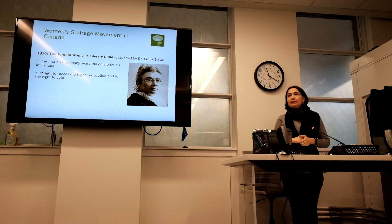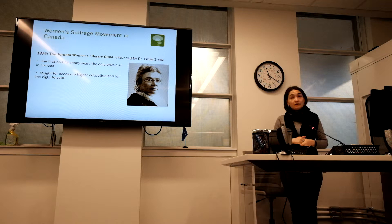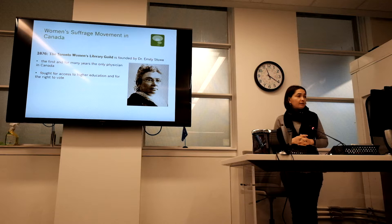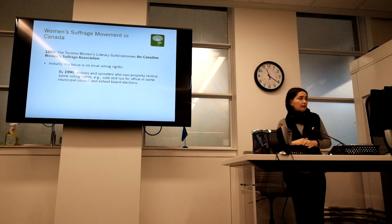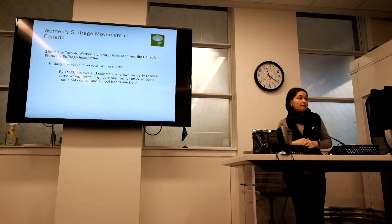In 1876, the Toronto Women's Literary Guild was founded by Dr. Emily Stowe — the first Canadian female physician, who for many years remained the only female physician in Canada. She fought for access to higher education and for the right to vote for women. In 1883, the Toronto Women's Literary Guild became the Canadian Women's Suffrage Association. Initially the focus was on local voting rights, and by 1890, widows and spinsters — unmarried women — who owned property received some voting rights, allowing them to vote and run for office in some municipal council and school board elections.